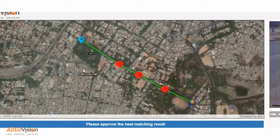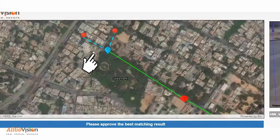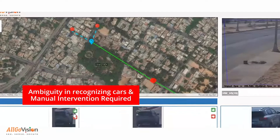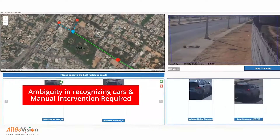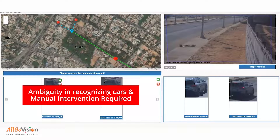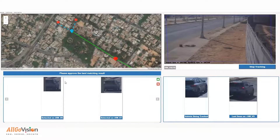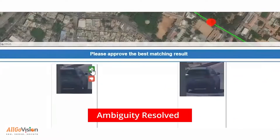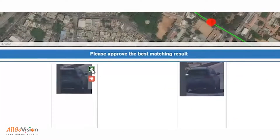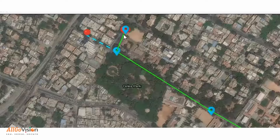At the point where the system is not sure of the vehicle's position, the user has to be involved to identify the car. Once the user selects the car, tracking continues.